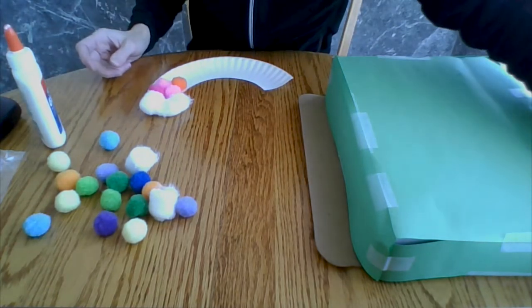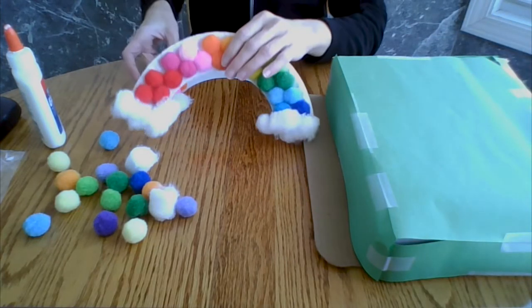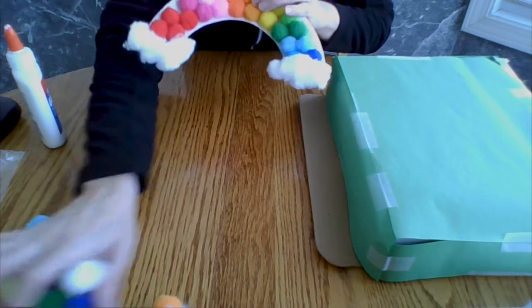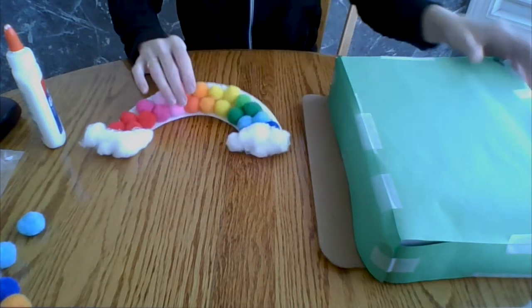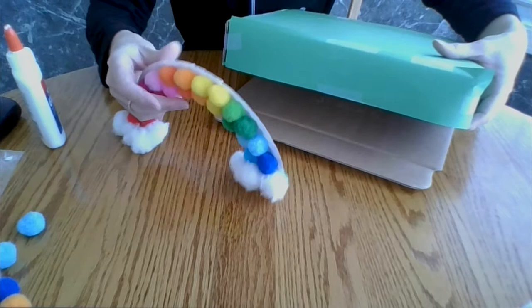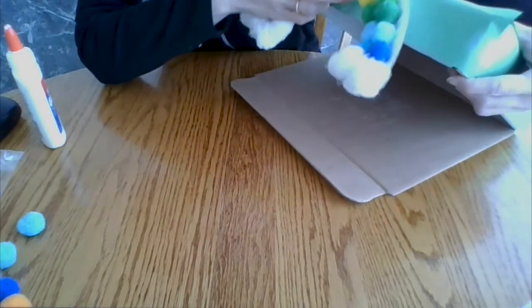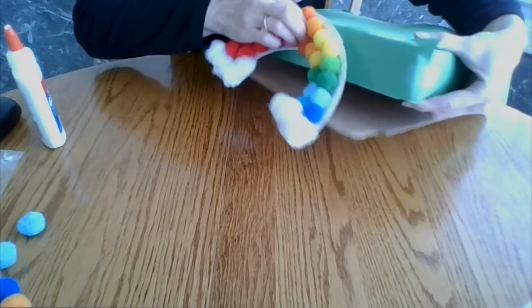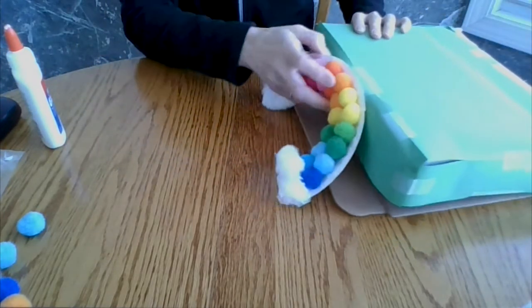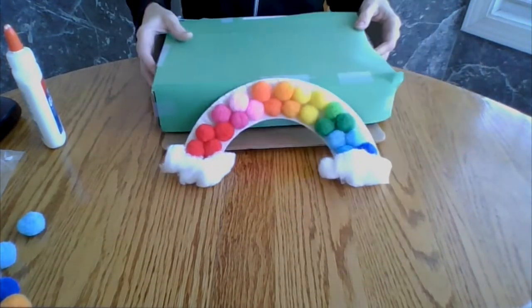Then when you're done, your rainbow is going to look something like this. So we can attach our rainbow here with glue or tape. Just make sure it's pretty high up so that when the box closes, the rainbow doesn't keep it from closing.